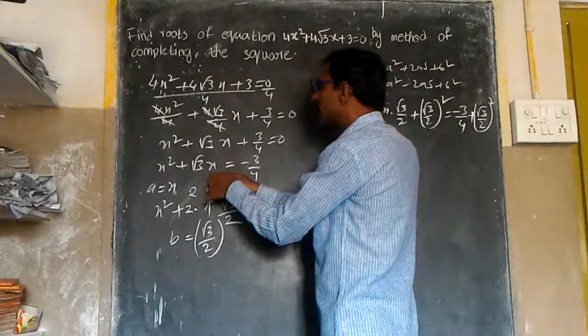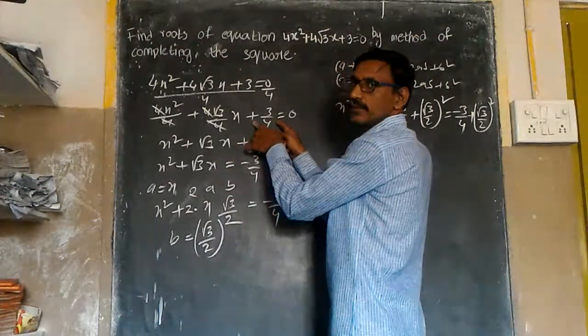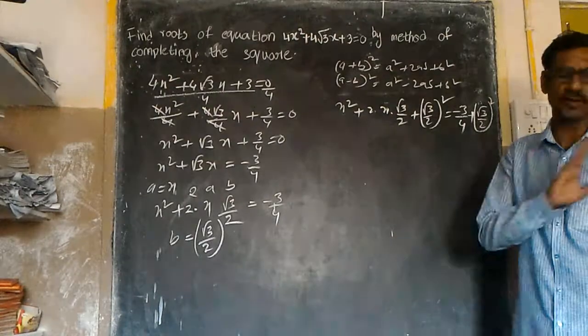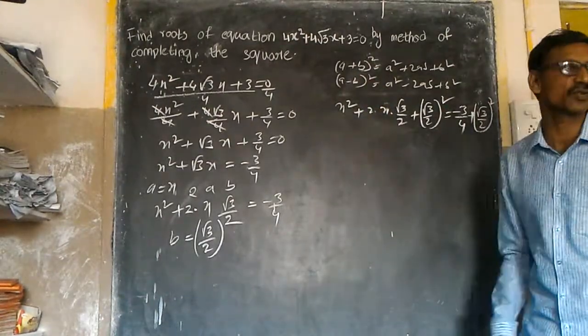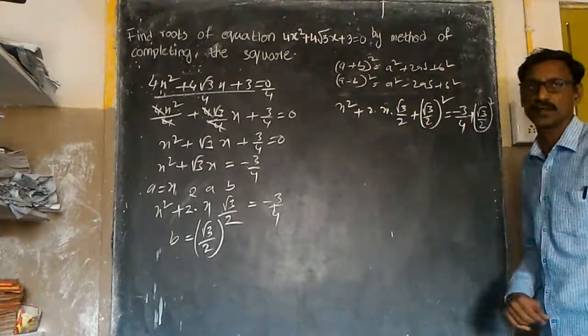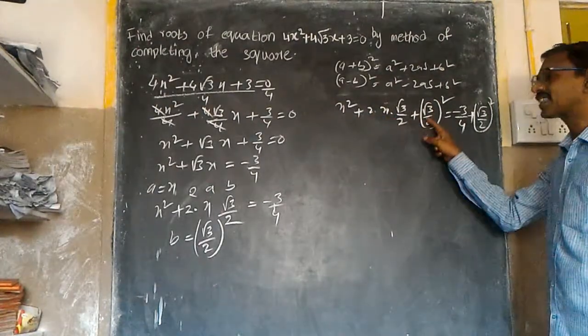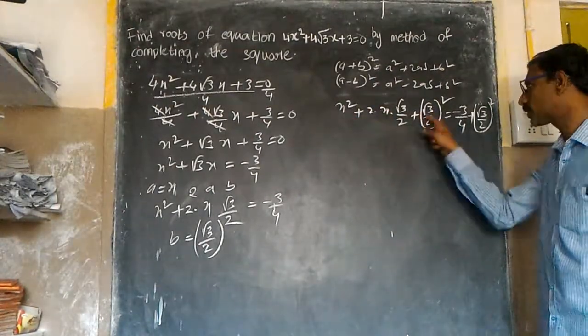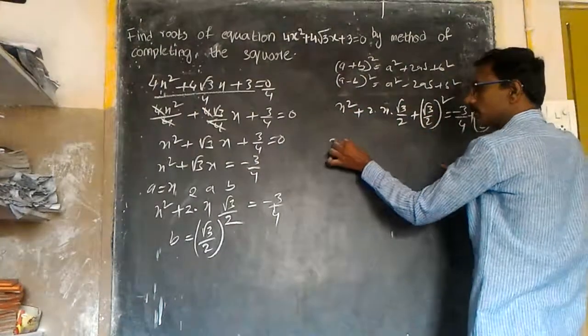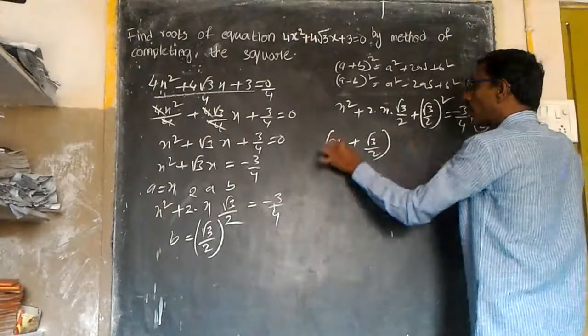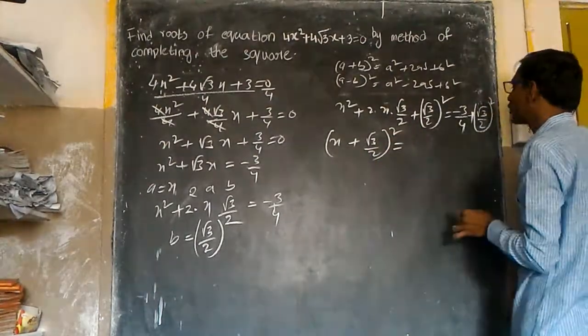Now the left side is a complete square: a² + 2ab + b² = (a + b)². With a = x and b = √3/2, we get (x + √3/2)².